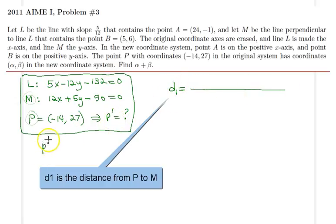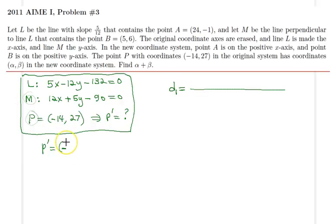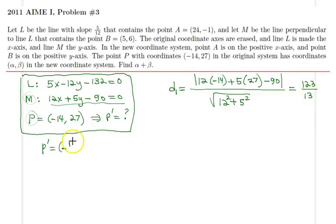So if you will, I'm using the distance formula with this equation up here. So 12 times negative 14 plus 5 times 27 minus 90, all in absolute values, divided by the square root of 12 squared plus 5 squared. So doing the arithmetic here, we will get 123 divided by 13. So therefore, the first coordinate is 123 divided by 13.